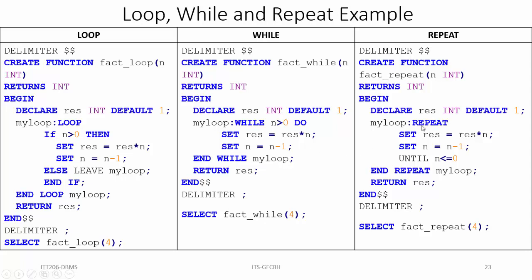In the case of repeat — which is an exit control loop — we first give the loop name: my_loop: repeat. Then the body: set result = result * n, and set n = n - 1. After the body we check the termination condition using 'until n <= 0'. When this condition becomes true it will exit the loop.